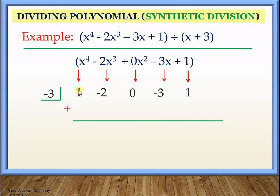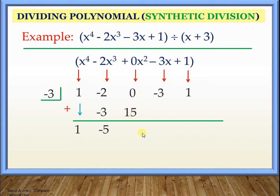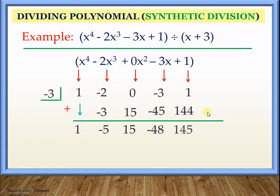Let's continue with the synthetic division. Drop the first value — the 1 is placed here. Multiply: negative 3 times 1, place the answer here, we have negative 3. Add: negative 2 plus negative 3 gives us negative 5. We have a new value, so multiply: negative 3 times negative 5 gives us positive 15. So 0 plus 15 gives us 15. Negative 3 times 15 gives us negative 45. Negative 3 plus negative 45 gives us negative 48. Negative 3 times negative 48 gives us positive 144. Add: 1 plus 144, we have 145.